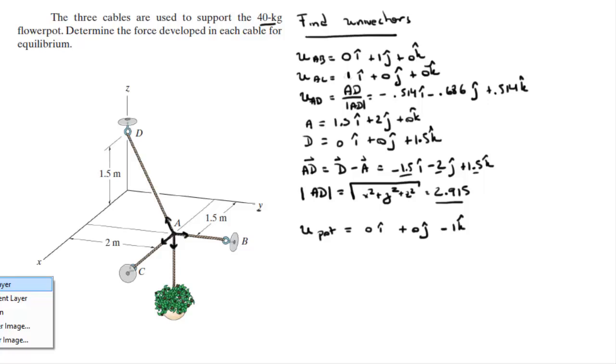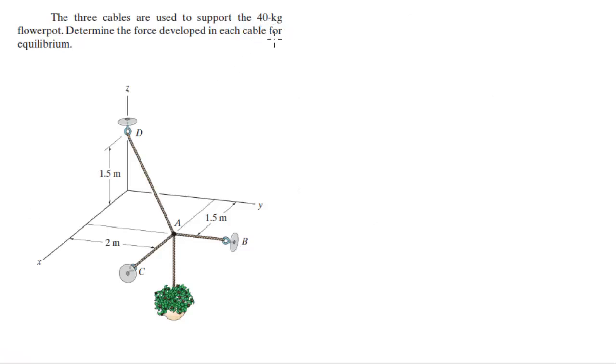The next thing that you need to do is multiply the unit vectors by the magnitudes or the forces. So basically you have the force AB, the force AC, the weight of the pot, and the force AD. And remember the one going down is the weight of the flower pot.